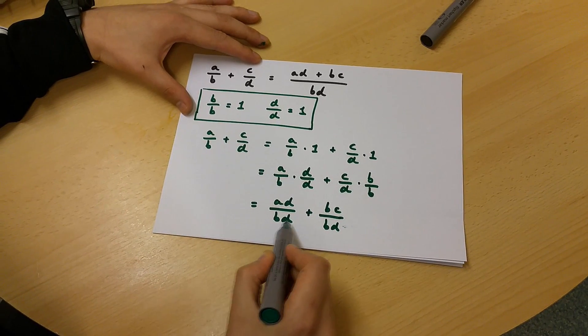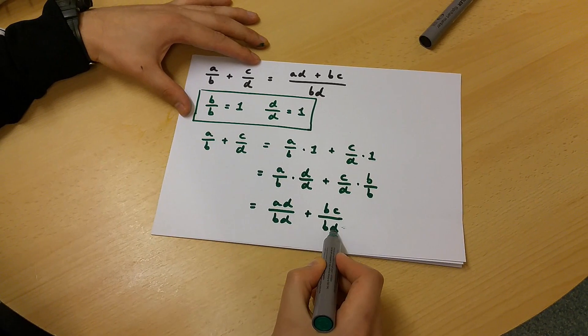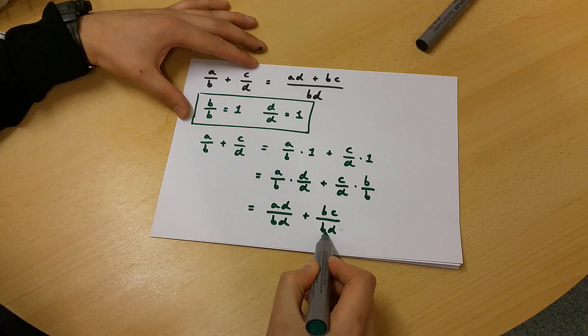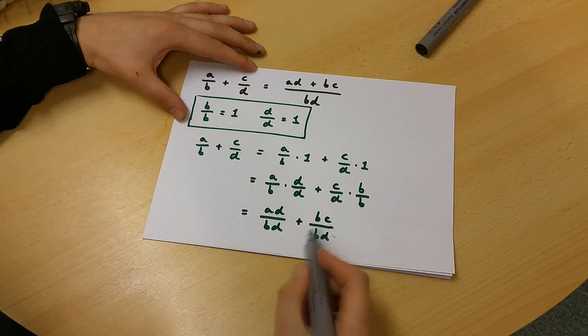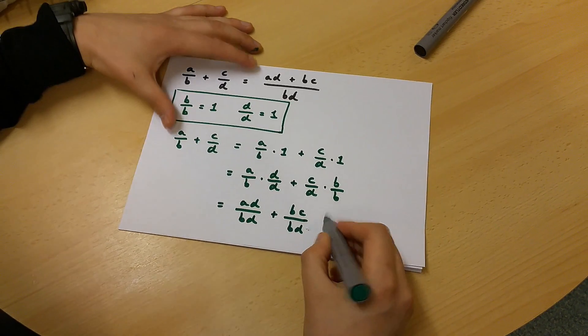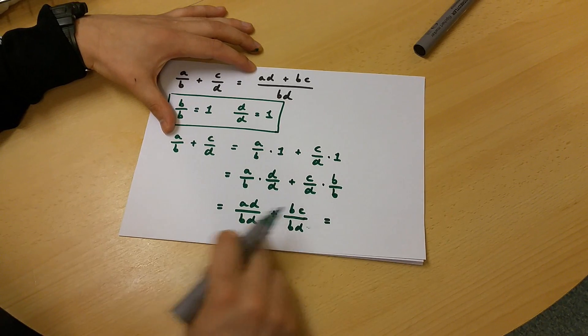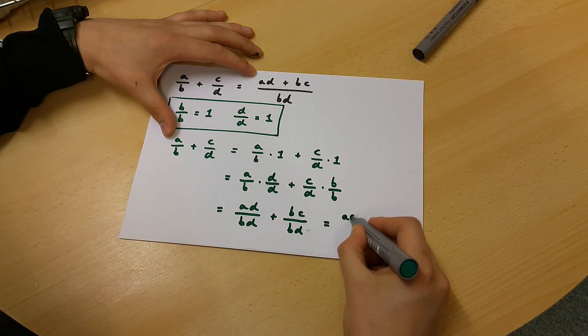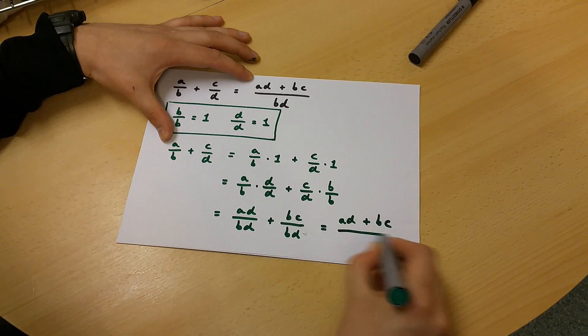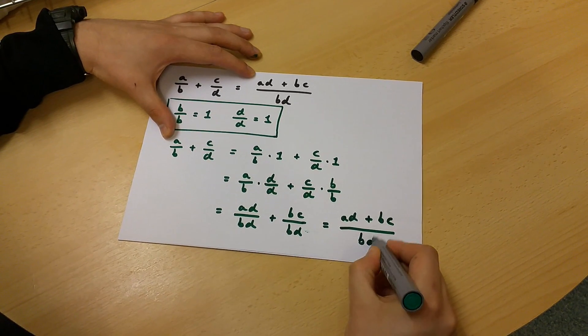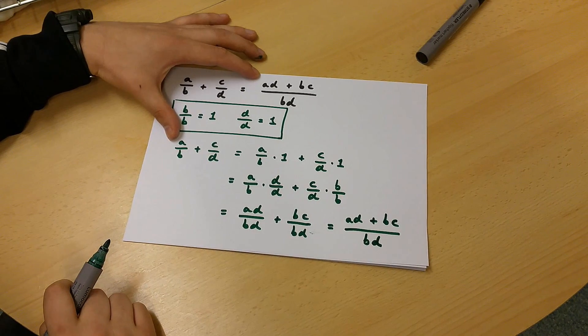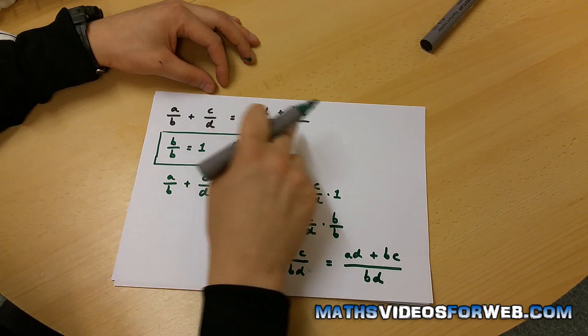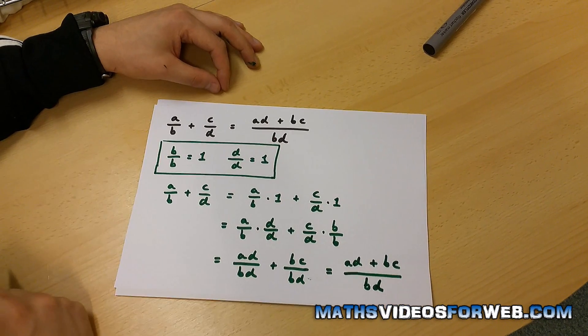Now from here, as both of these fractions contain the same denominator BD, we can say that this expression over here is equal to (AD plus BC)/BD. So we've proven that this is equal to this right over here.